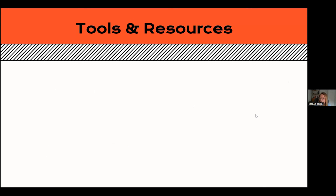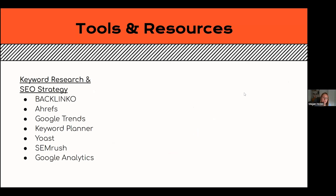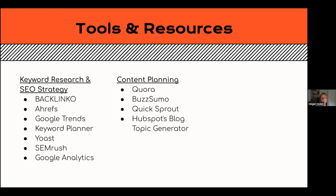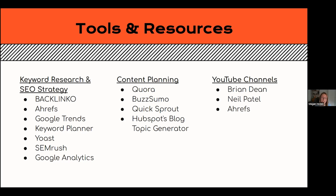Before I finish up, I want to share some resources and tools for blogging. For keyword research and SEO strategy: Backlinko, Ahrefs, Google Trends, Keyword Planner, Yoast, SEMrush, and Google Analytics. For content planning: Cora, BuzzSumo, QuickSprout, and HubSpot's Blog Topic Generator. Some YouTube channels I really like for blogs and SEO: Brian Dean, founder of Backlinko; Neil Patel, a very well-known digital marketer; and Ahrefs, which has a really good YouTube channel with lots of resources.